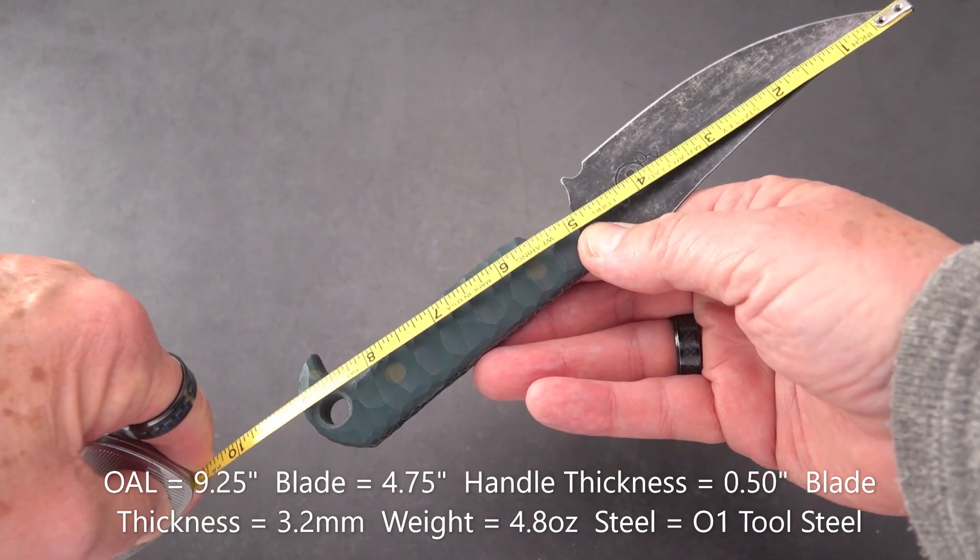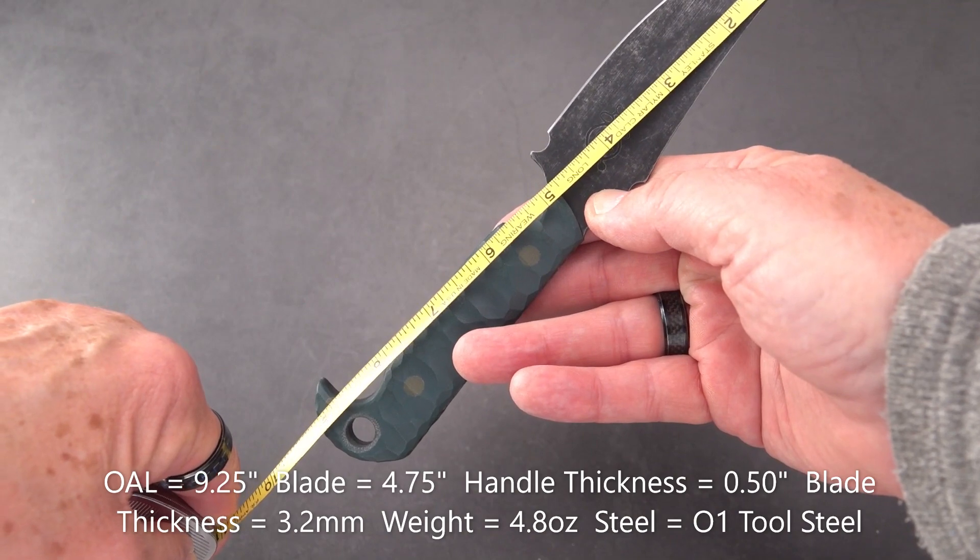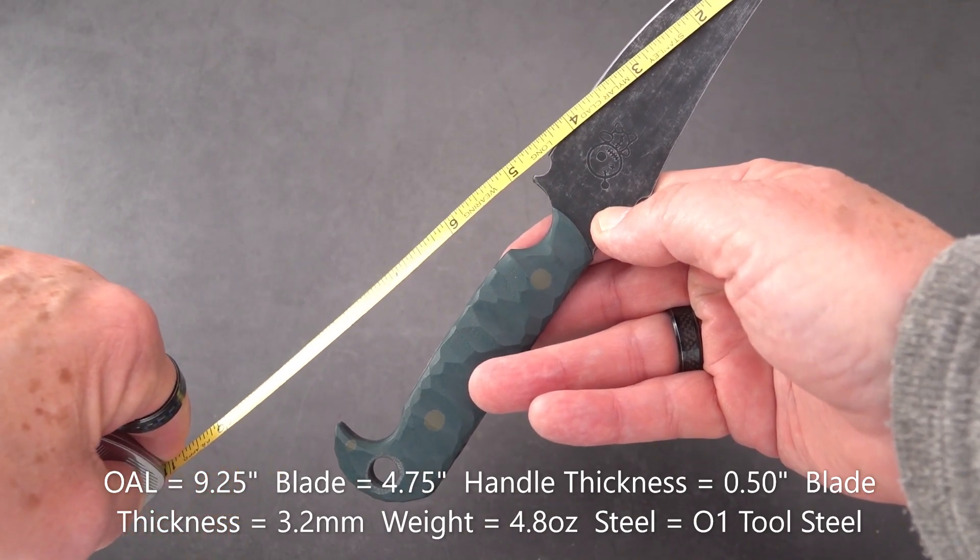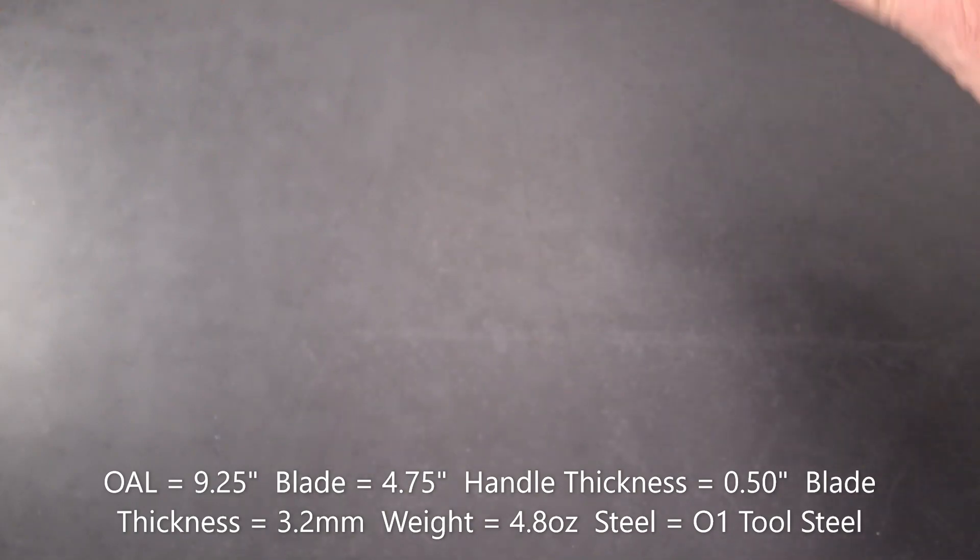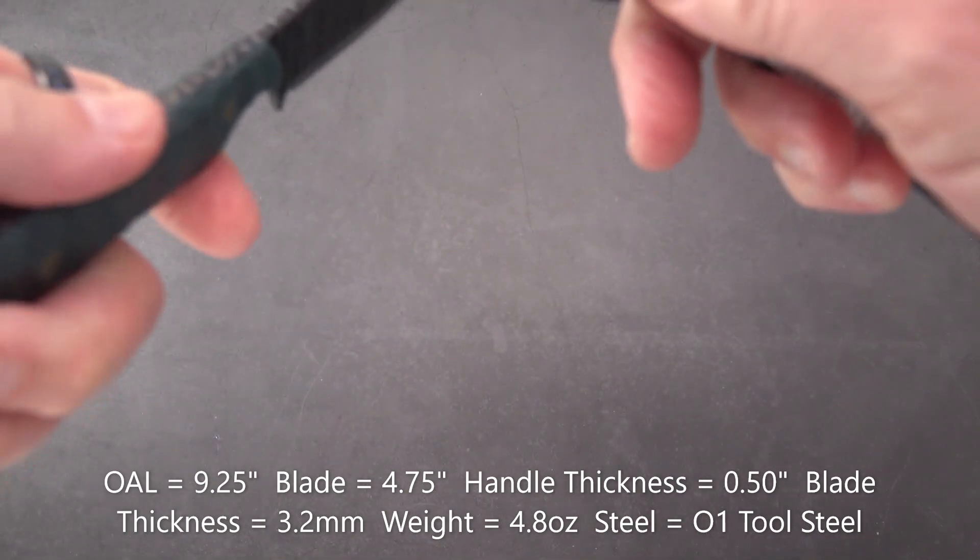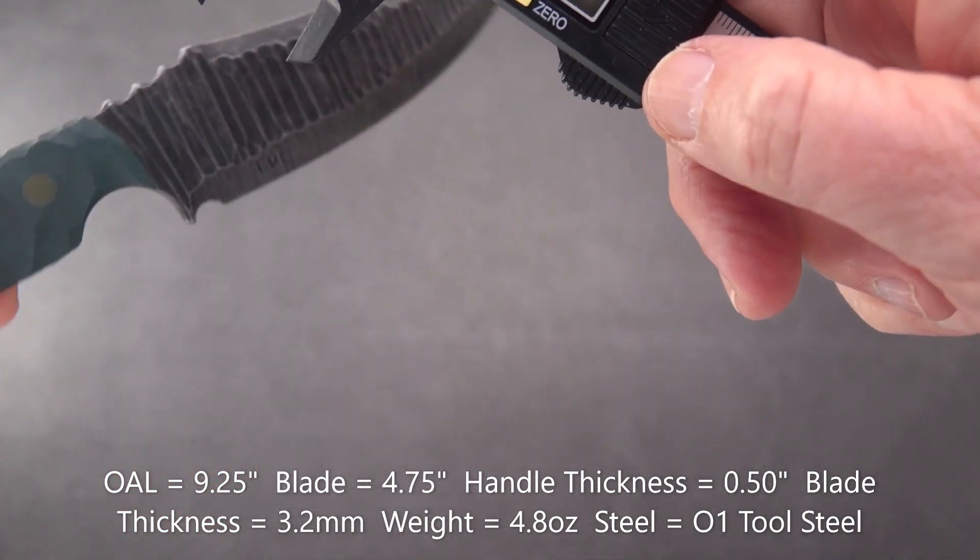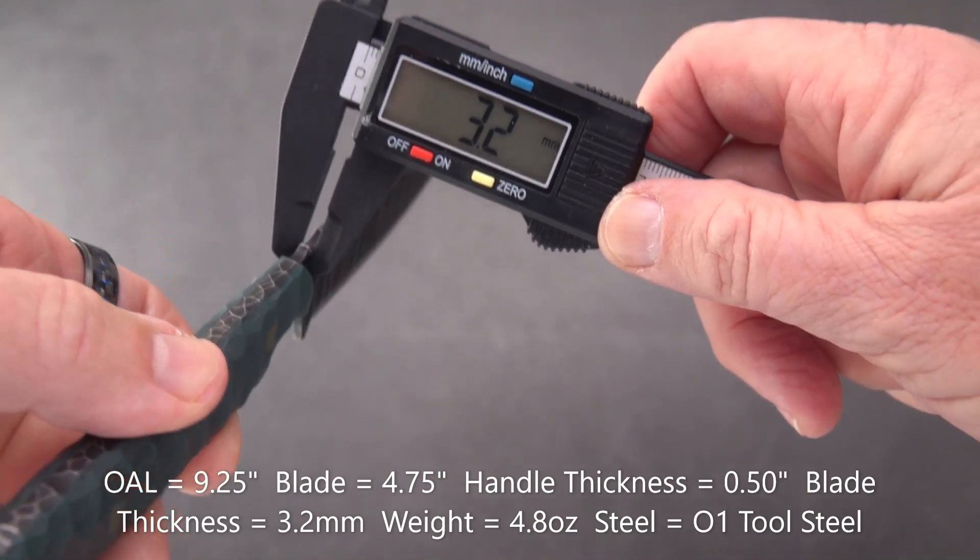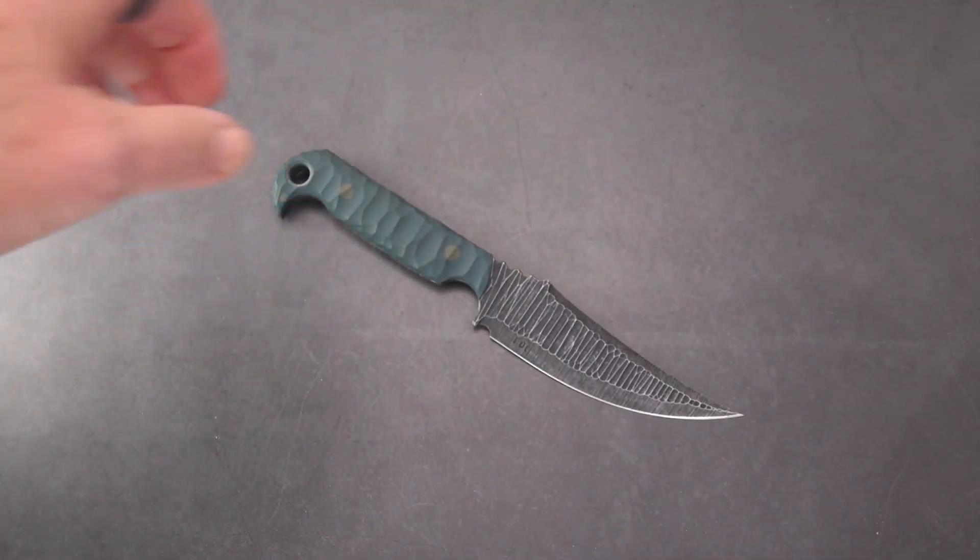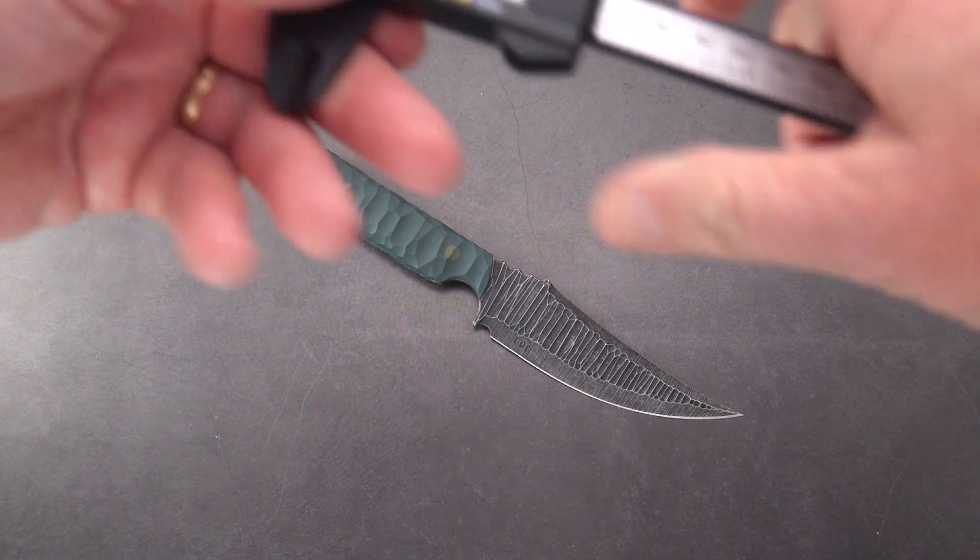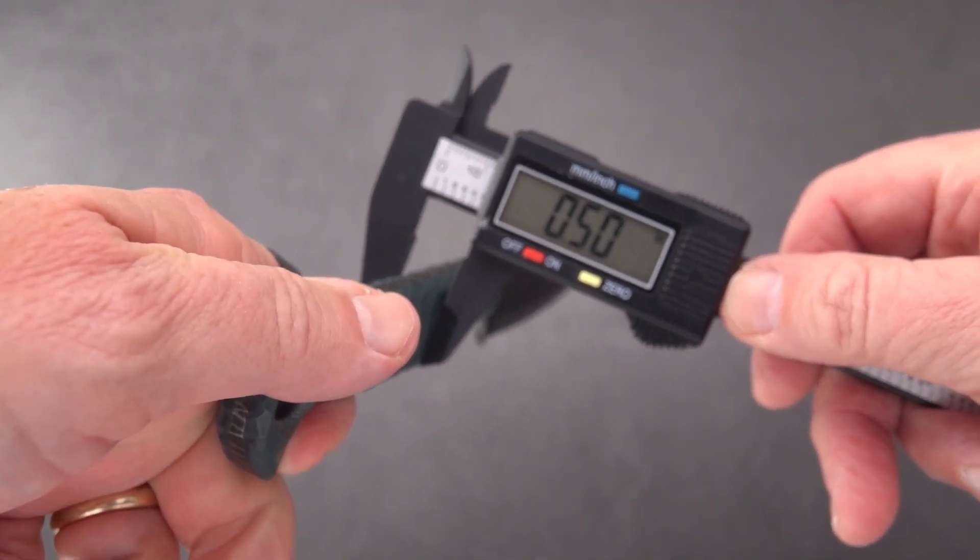Nine and a quarter overall length. The blade is, I'm going to call it four and three quarters. Maybe it's a skosh more, right to the handle. Cutting edge is, I'm going to call that three point four. Bladestock in millimeters, three point one. Let's make sure I'm getting it where I want to get at the texture and can throw me off a little bit. Three point two.